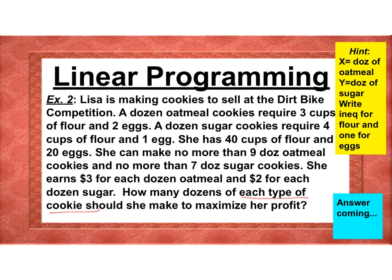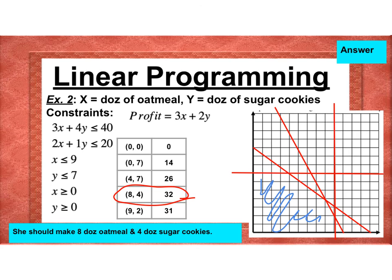Here's the answer. The flour equation and egg equation are written as constraints, plus x ≤ 9 and y ≤ 7. After shading all constraints and finding all vertices, the maximum profit is $32. Lisa should make 6 dozen oatmeal cookies and 4 dozen sugar cookies. Nice job!